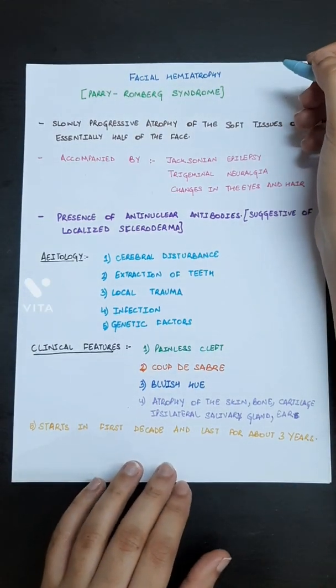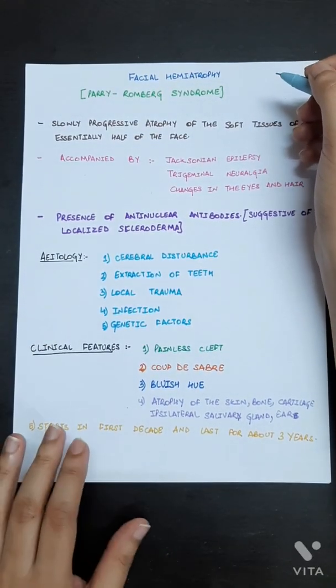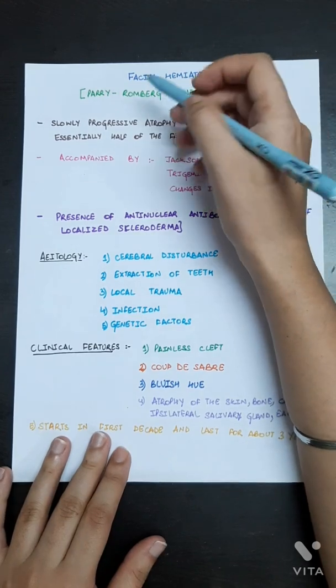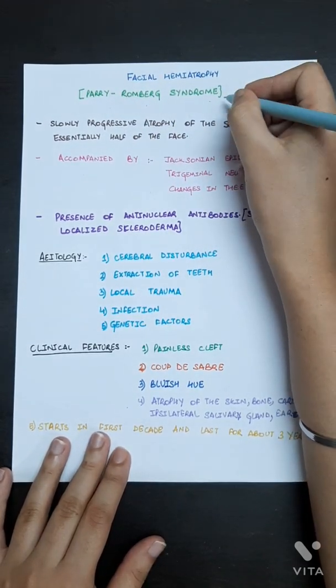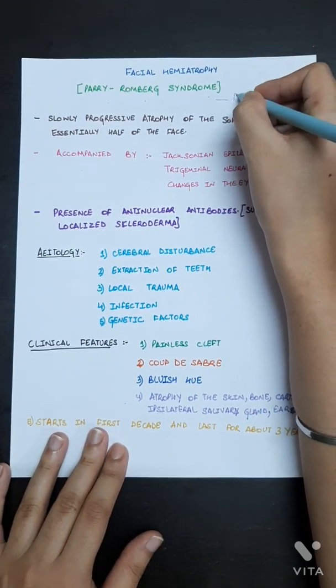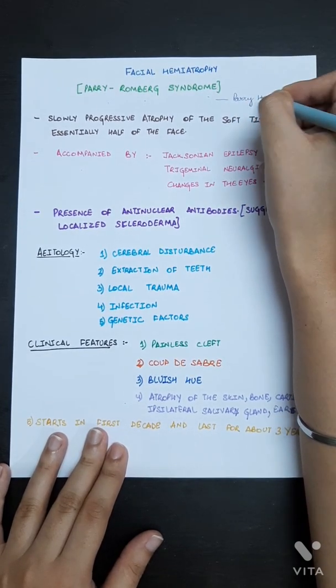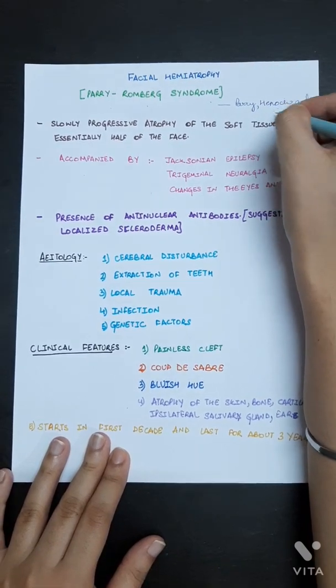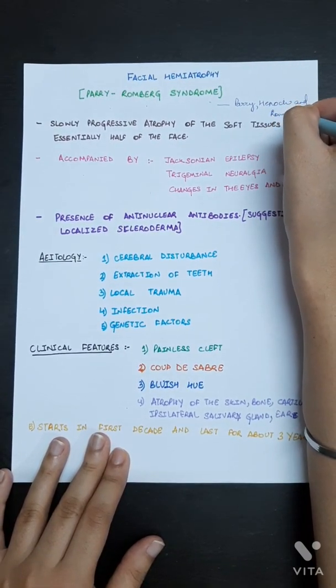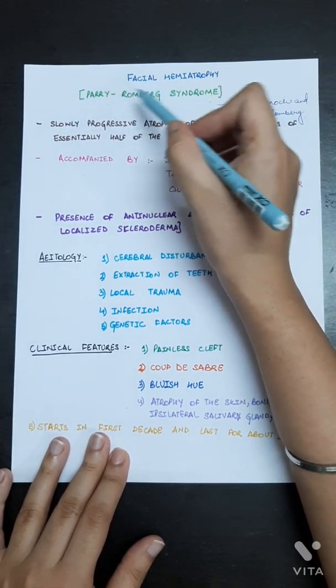Hey all, today we are going to discuss facial hemiatrophy, which is also known as Parry-Romberg syndrome as it was described by Parry, Henoch, and Romberg.